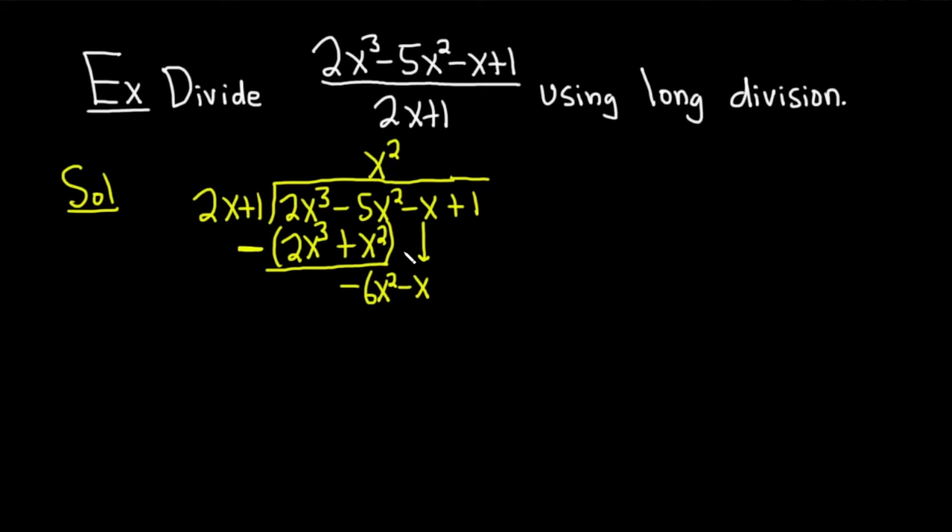And then you ask the question again, what do you multiply by 2x in order to get -6x²? Well, -3x. Then you multiply. -3x times 2x is -6x². -3x times 1 is -3x. You draw a line. I'm going to put parentheses, a big minus sign and add. -6x² plus 6x² is 0. -x + 3x is 2x. Very easy to mess up there, right? Got to be really careful. Then you bring down the 1.